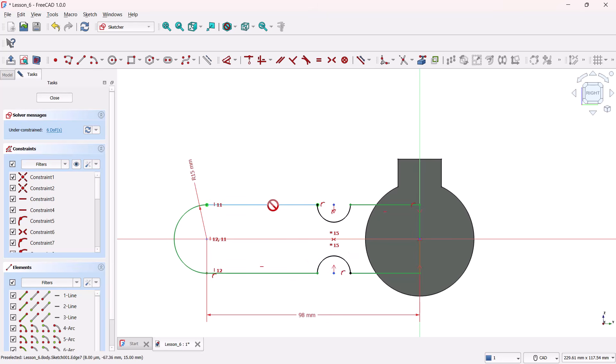But now, these two lines lost their constraints. Select these lines and make them horizontal.